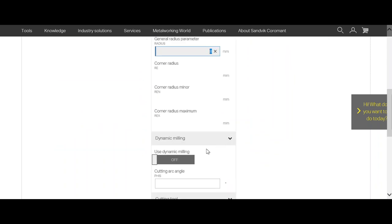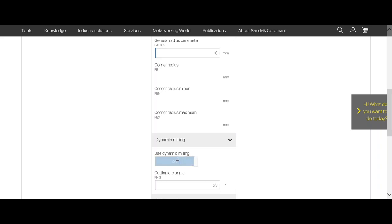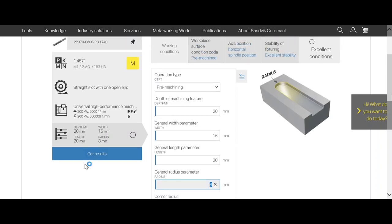The corner radius is already selected. It's 8mm. And now we turn on the dynamic milling function. And we are ready to get results.